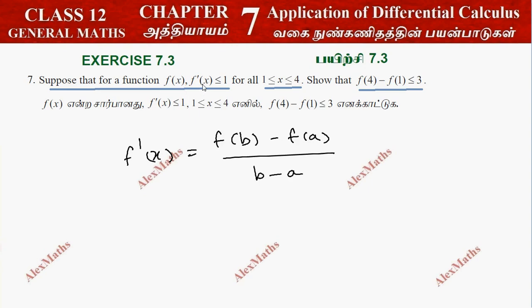f dash of x is less than or equal to 1. The interval is 1 less than or equal to x less than or equal to 4. So a is 1 and b is 4.